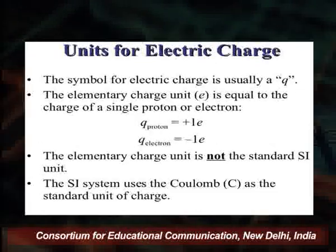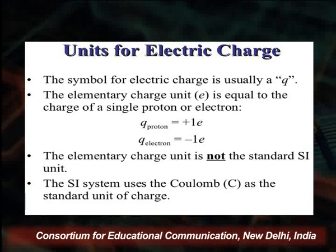Charged objects exert electric forces on each other — opposite charges attract and like charges repel. We can say in broader terms that electric charge is a conserved quantity. It is represented by Q, and the unit of electric charge is the Coulomb. The elementary charge E is such that the charge of a proton is +1e and the charge of an electron is -1e.